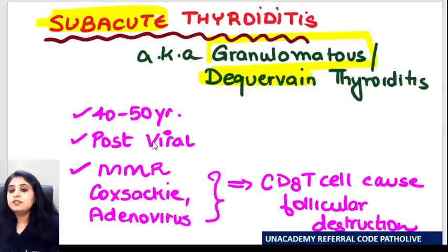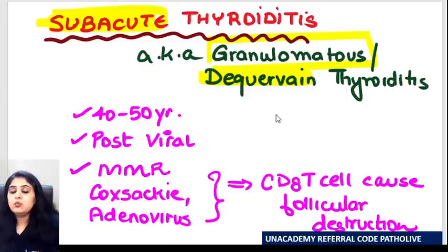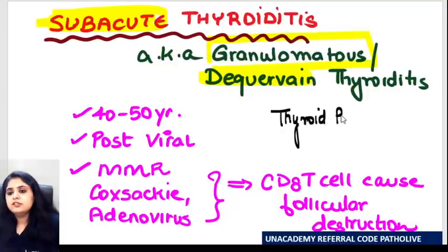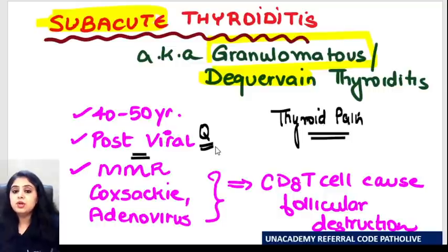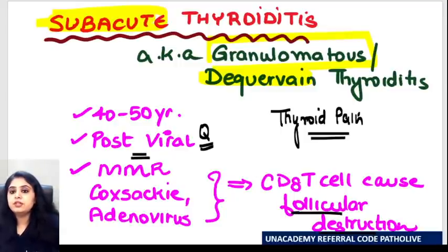The usual kind of history that would be given to you would be something to do with pain. This is clinically one of the most common causes of thyroid pain. An adult person presenting with thyroid pain and anterior neck swelling. It could occur post-viral — that's a very important history — and it is associated with measles, mumps, rubella, coxsackie virus, and adenovirus, causing destruction of the follicles.